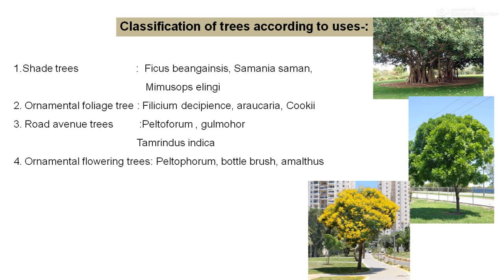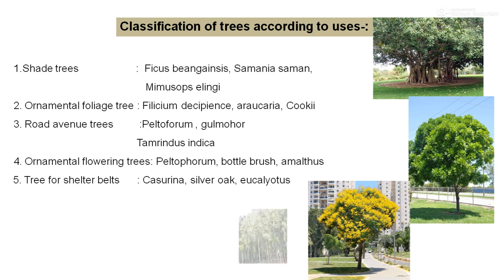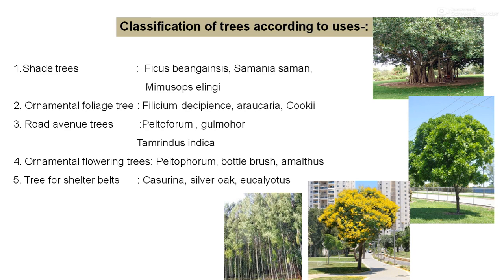And ornamental flowering trees — Peltophorum and Bottle Brush are considered ornamental, and in addition they belong to the flowering category, which plays a very vital and important role in any type of garden. Trees for shelter belts: plants like eucalyptus, silver oak, and casuarina are useful for shelter belts in areas with high wind velocity, which causes detrimental effects on the main crop. Hardy or fast-growing plants are used as trees in this category.